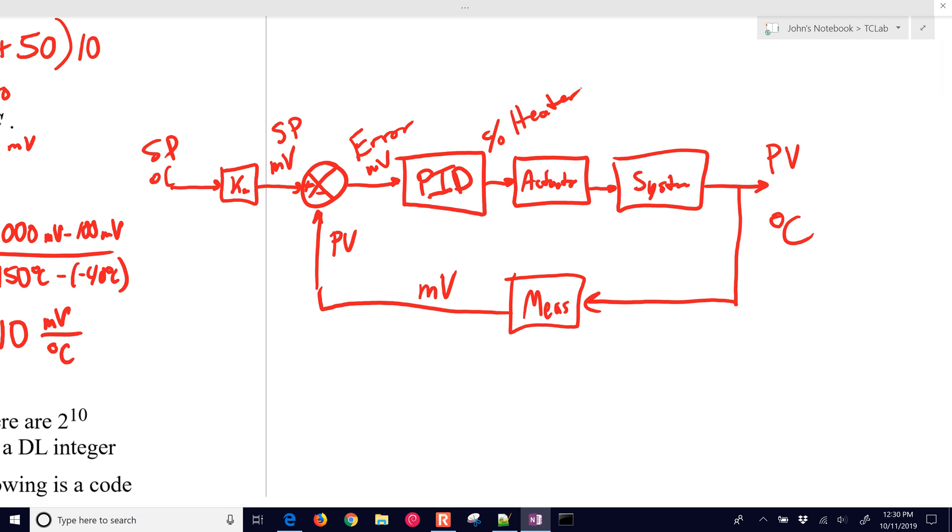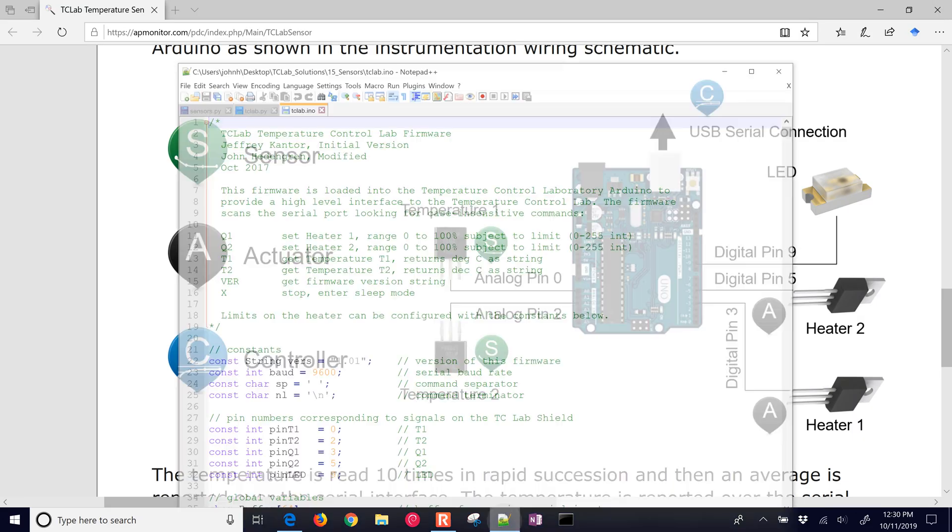Now, one of the things we do sometimes with digital control systems is we convert to degrees Celsius, but it's a digital number, degrees C digital, and so we can just forget the millivolts, and that Km would just be a one. Basically, you have your analog signal, and that is the actual temperature, and you're just converting it to a digital signal.